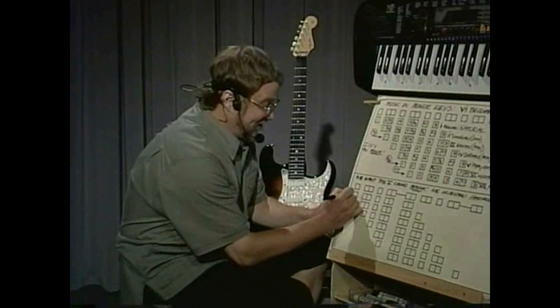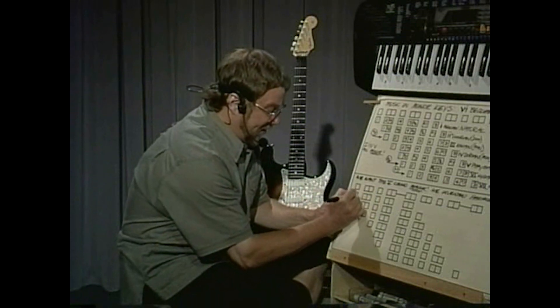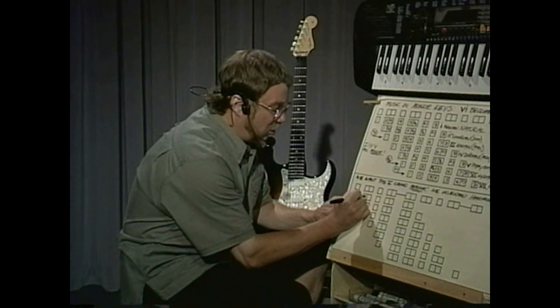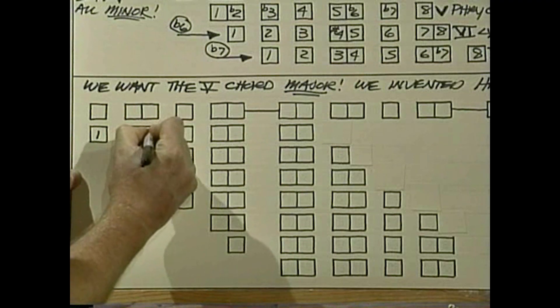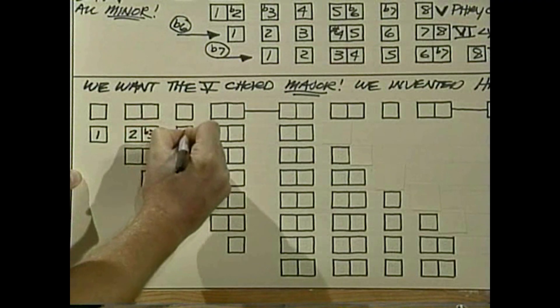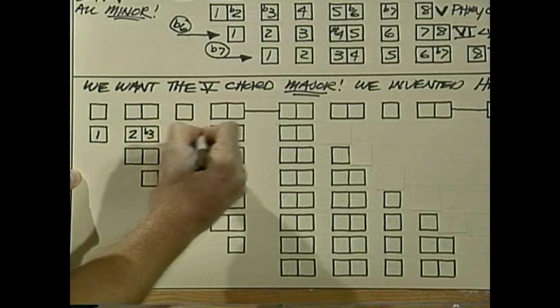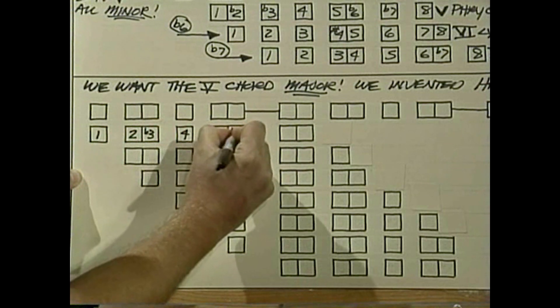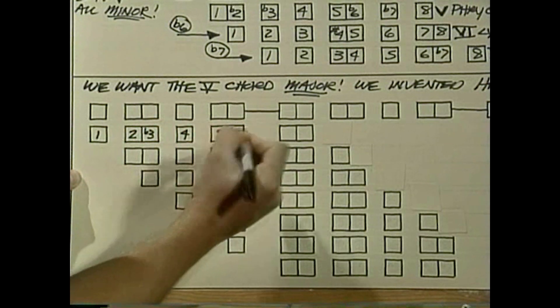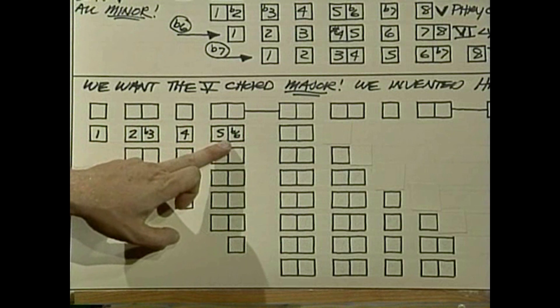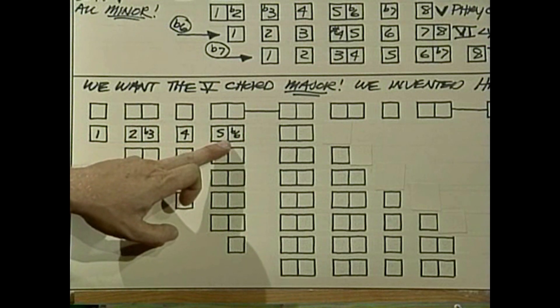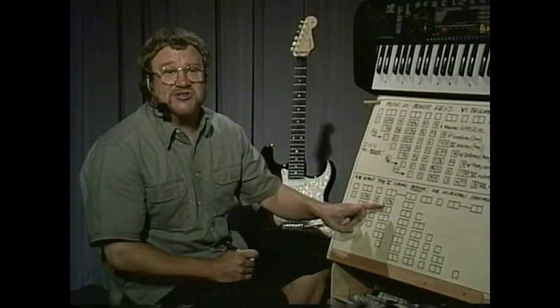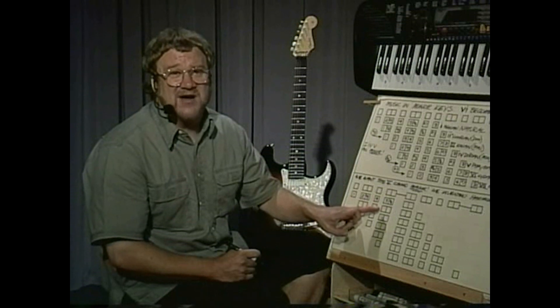If we look at the note numbers, this scale goes: one, whole step to two, half step to flat three, whole step to four, whole step to five, half step to flat six. So far, this scale is identical to the natural minor — but here's where it's different.